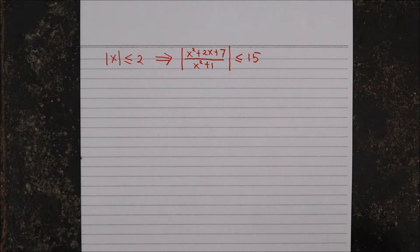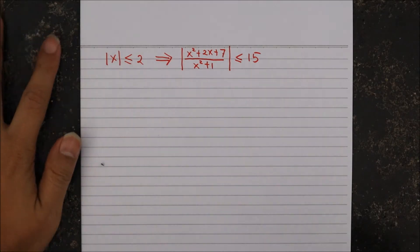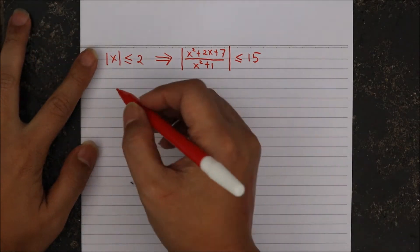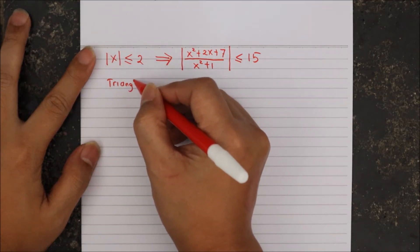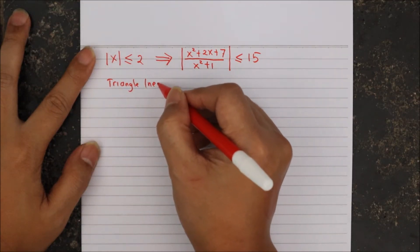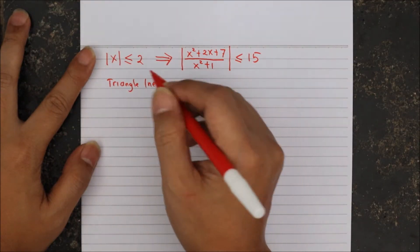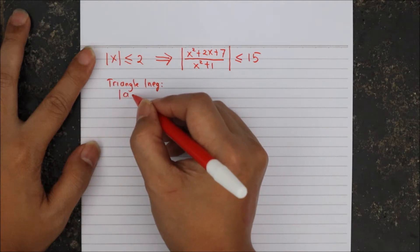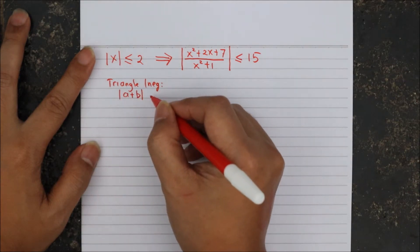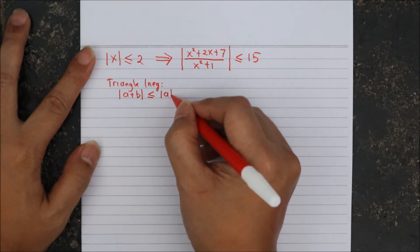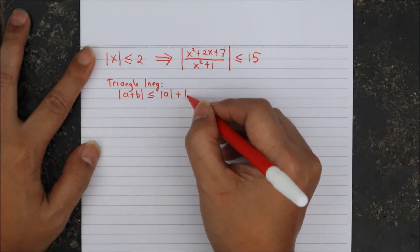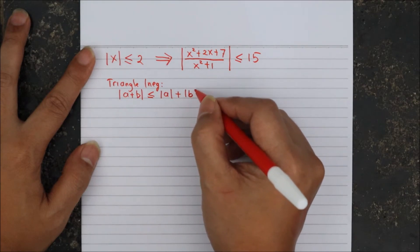The main trade of tools here is the triangle inequality. The triangle inequality says that the absolute value of a plus b is always less than or equal to the absolute value of a plus the absolute value of b.